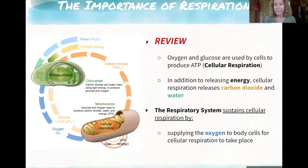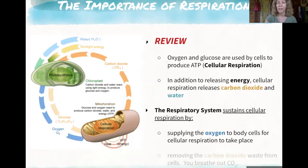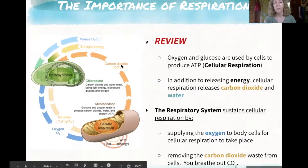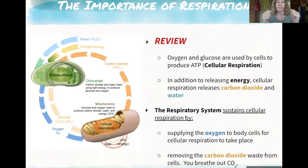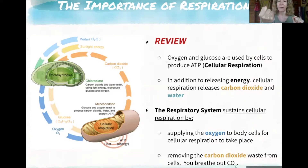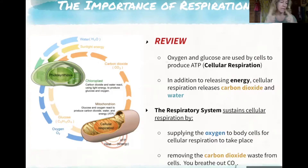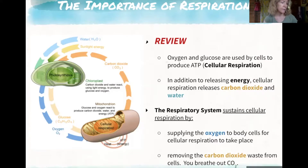The respiratory system sustains cellular respiration by supplying the oxygen required for cellular respiration and removes the waste product carbon dioxide when you breathe out. Sometimes students conflate the two and think the respiratory system is the same thing as cellular respiration — it's not; they're two different things, but obviously they're connected. The respiratory system, the hardware of your lungs and breathing, supports cellular respiration taking place in the mitochondria.